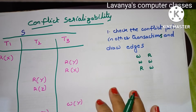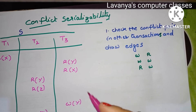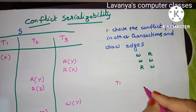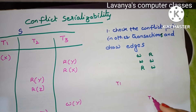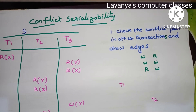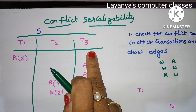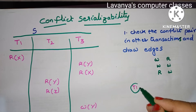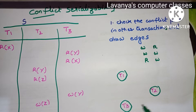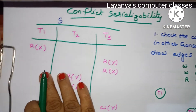Check the conflict pairs and draw a precedence graph. A graph is a combination of nodes and edges. How many nodes are required depends on the transactions. Here we have three transactions — T1, T2, T3 — so we consider three vertices, three nodes. Now we will go and check the conflict pairs in sequential order.